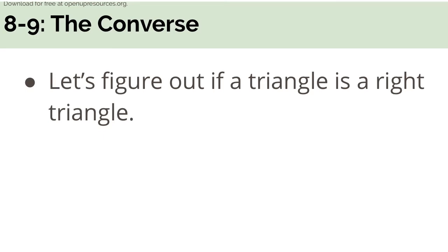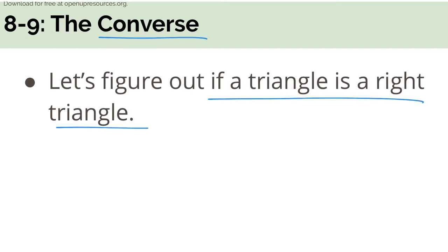Hello, 8th graders. In this video, we're covering both lessons 9 and 10. Lesson 9 is called the converse — and no, we're not referring to the shoes. It's a way to use the Pythagorean theorem to figure out if a triangle is a right triangle. Same Pythagorean theorem, just using it in a different way.